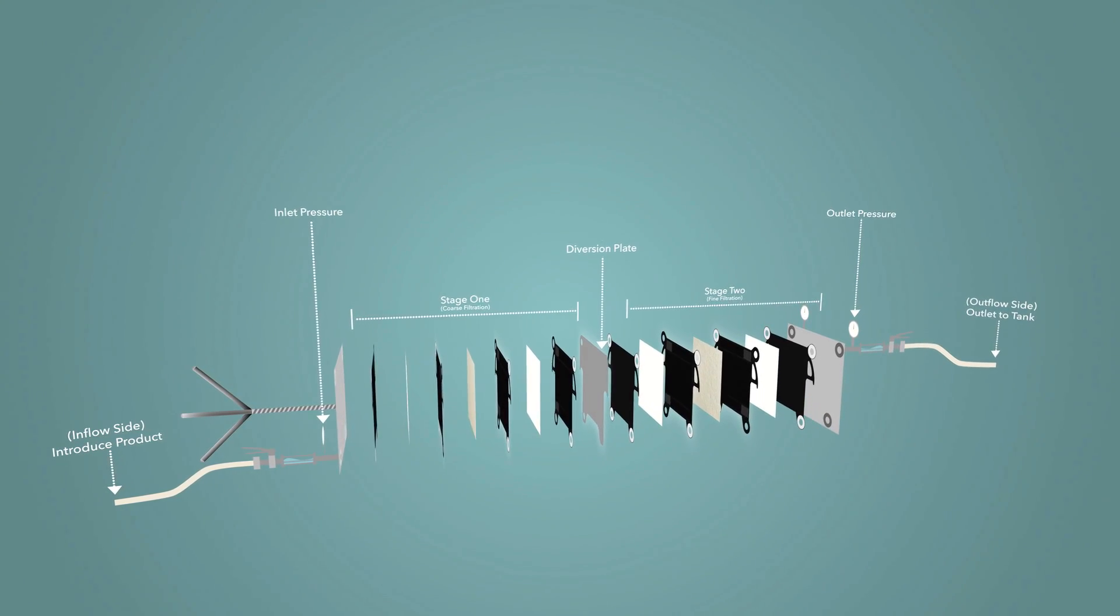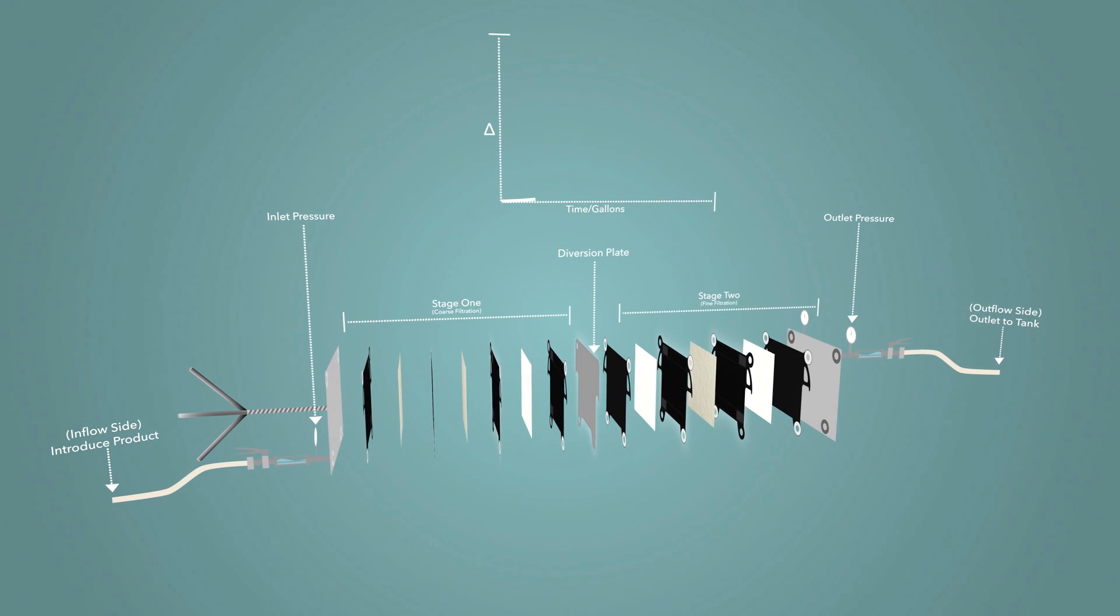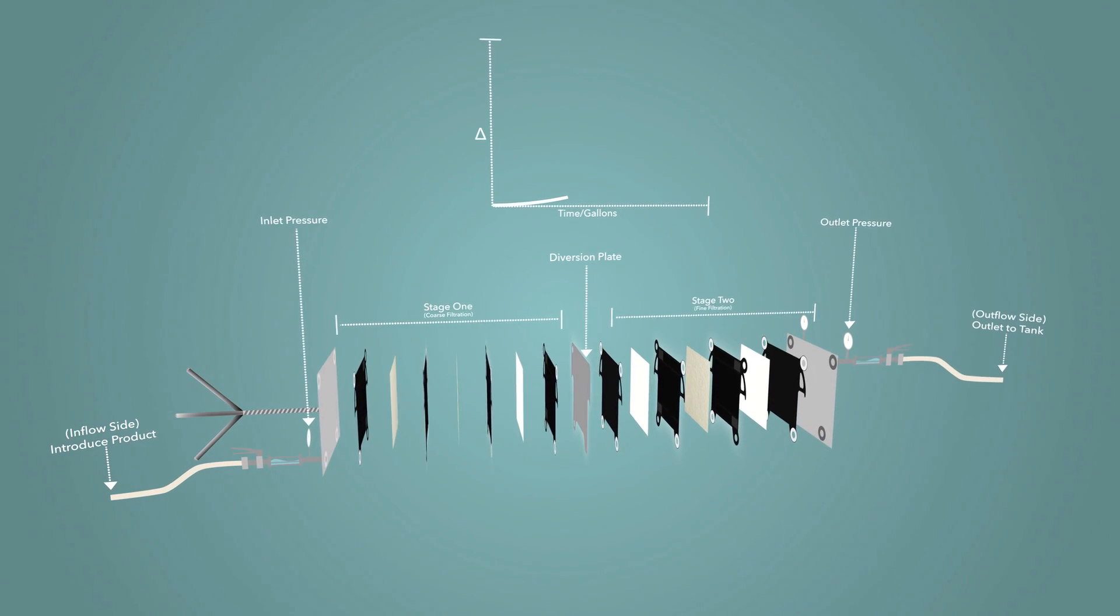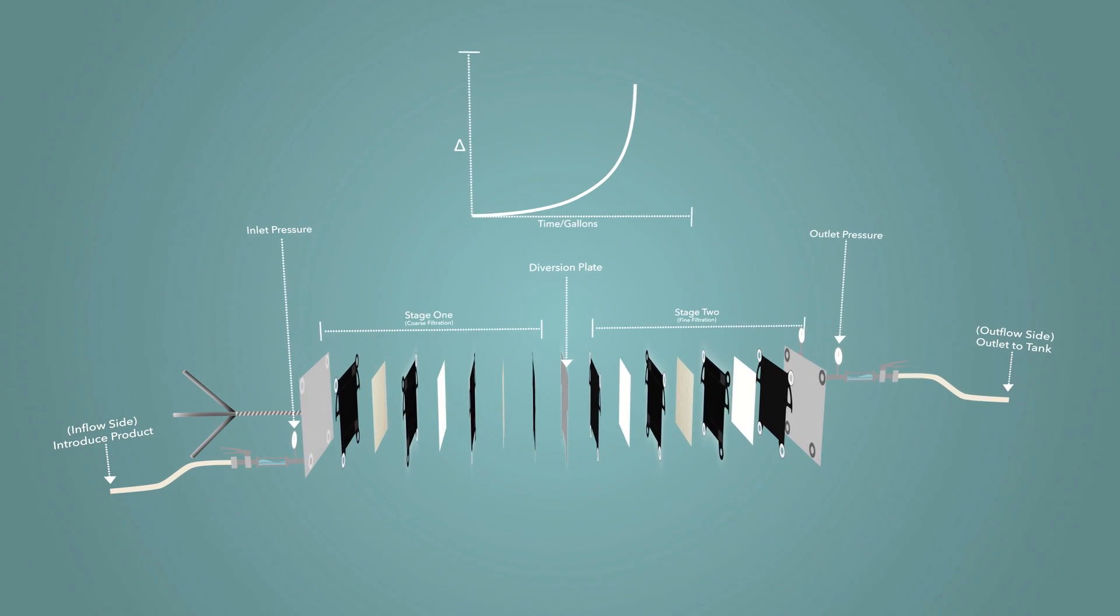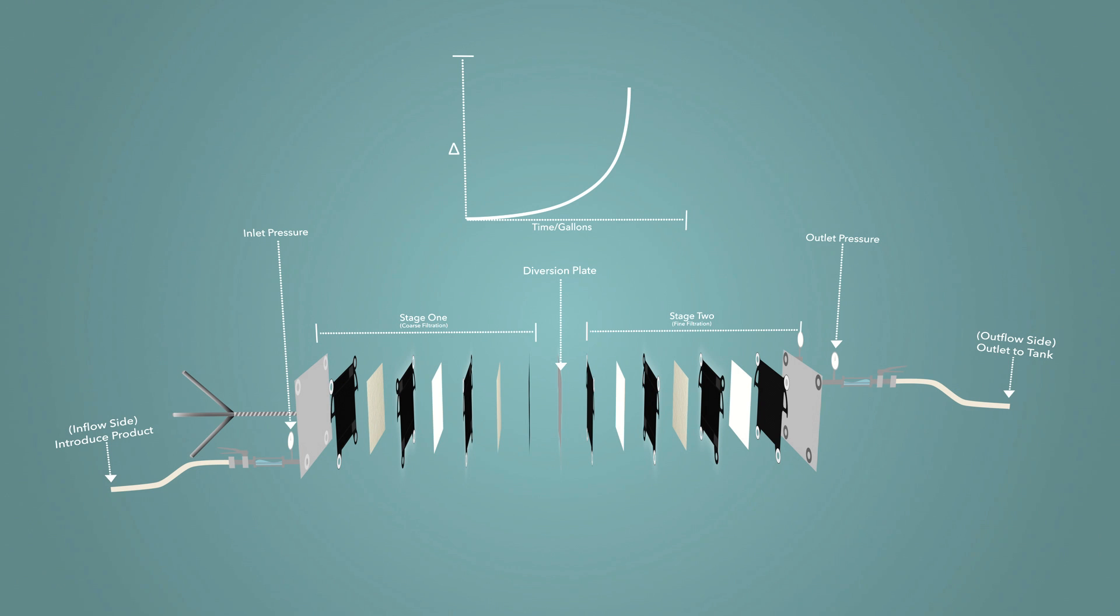As the filtration progresses, pressure will increase as solids are retained by the filter sheets. Graphically, this is seen as an exponential growth in pressure. As time passes and gallons are filtered, pressure will increase at an accelerated rate.